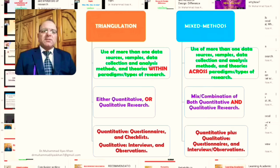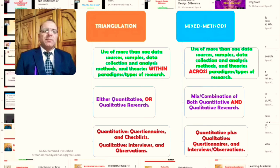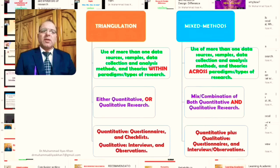On the other hand, in mixed methods, there will be quantitative plus qualitative data. For example, in data collection methods, we will use questionnaires and interviews or observations — both quantitative and qualitative data collection types. And it is obvious that in line with both types of data that we will get, we will make use of appropriate quantitative and qualitative data analysis methods as well.